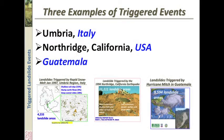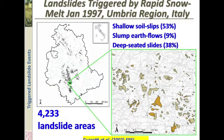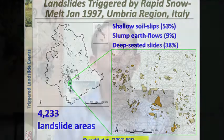I'm going to show you three examples of triggered landslide events: the first from Italy, the second from the USA, and the third from Guatemala. Looking at Italy, what we see here is a landslide inventory map. On the left-hand side is an outline of the province of Umbria from Italy, and we've blown this up on the right-hand side where you can see individual landslides that have been mapped in this triggered landslide event.